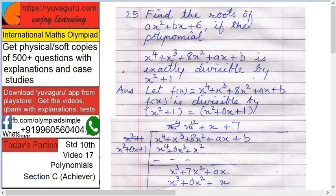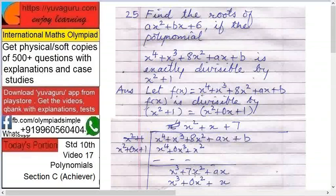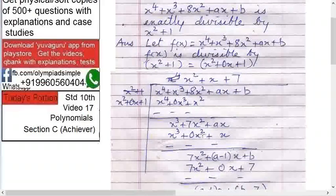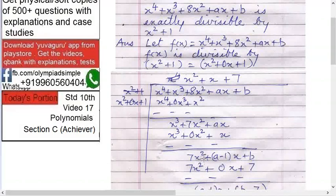First with first, same logic as earlier problems. So x raised to 4 plus 0x cube plus x square, then minus x cube plus 7x square plus ax. Then again first with first, x cube plus 0x square plus ax. Then again, this division you might be knowing by now, so 7x square plus a.